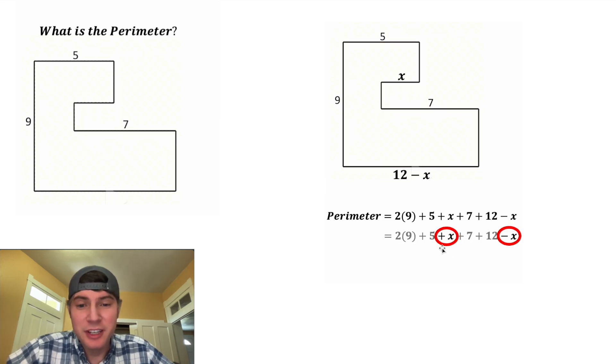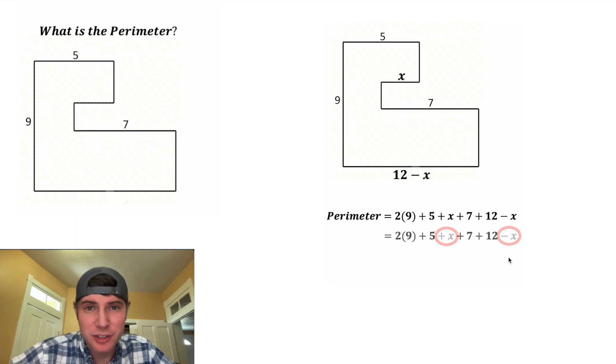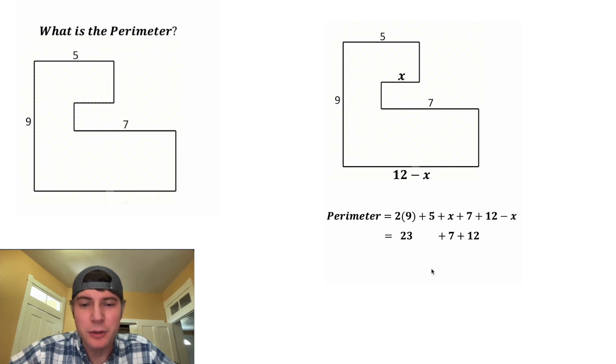So first thing I'm noticing is the positive X and the negative X. Those are going to cancel each other out. And then we can smoosh everything together. 2 times 9 is equal to 18. 18 plus 5 is equal to 23. 23 plus 7 is equal to 30. And 30 plus 12 is equal to 42.